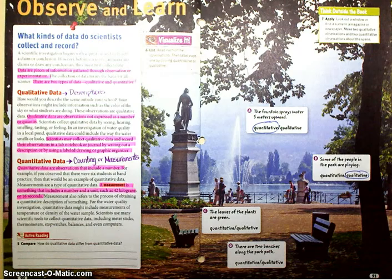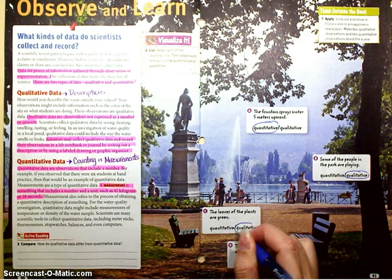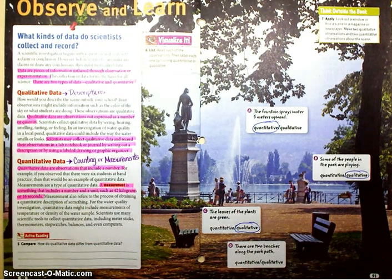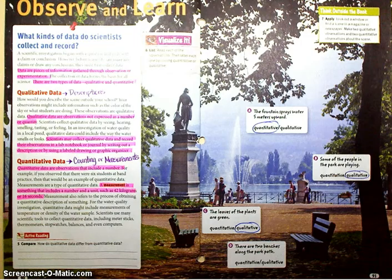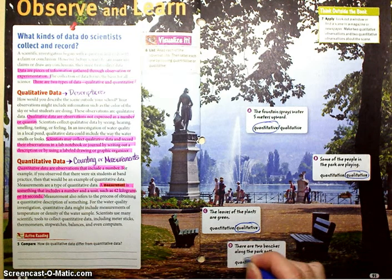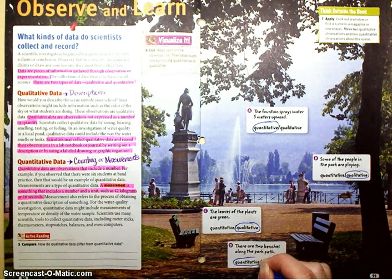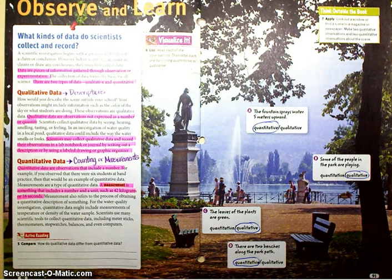Observation C: the leaves of the plants are green. That is qualitative — again, that is just a description; it does not involve numbers. Observation D: there are two benches along the park path. That's quantitative. Why? Because you counted something — it involves a number.